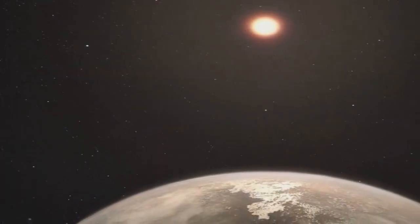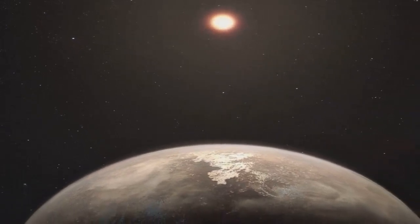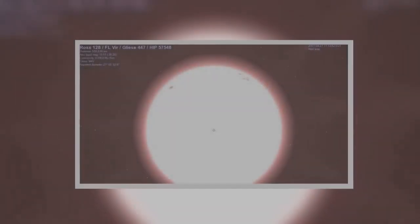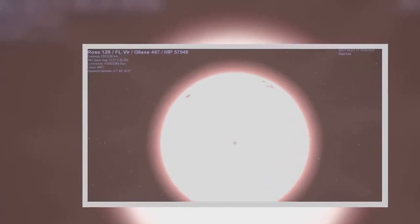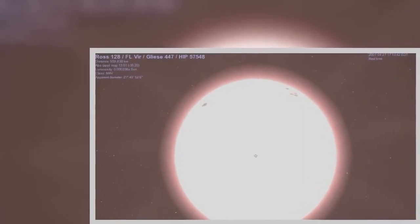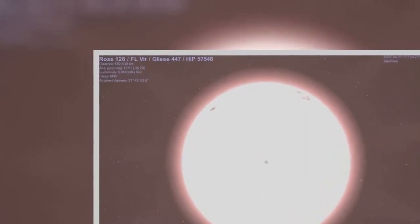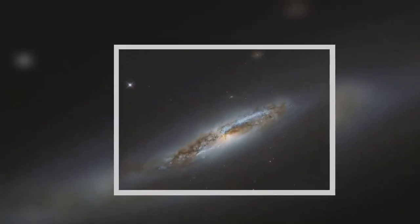But the closest one, known as Proxima b, looks to be less hospitable for life. Found in 2016, it orbits the star Proxima Centauri, which is known to be a rather active red dwarf star. This means that powerful eruptions and charged particles periodically batter Proxima b with harmful radiation.